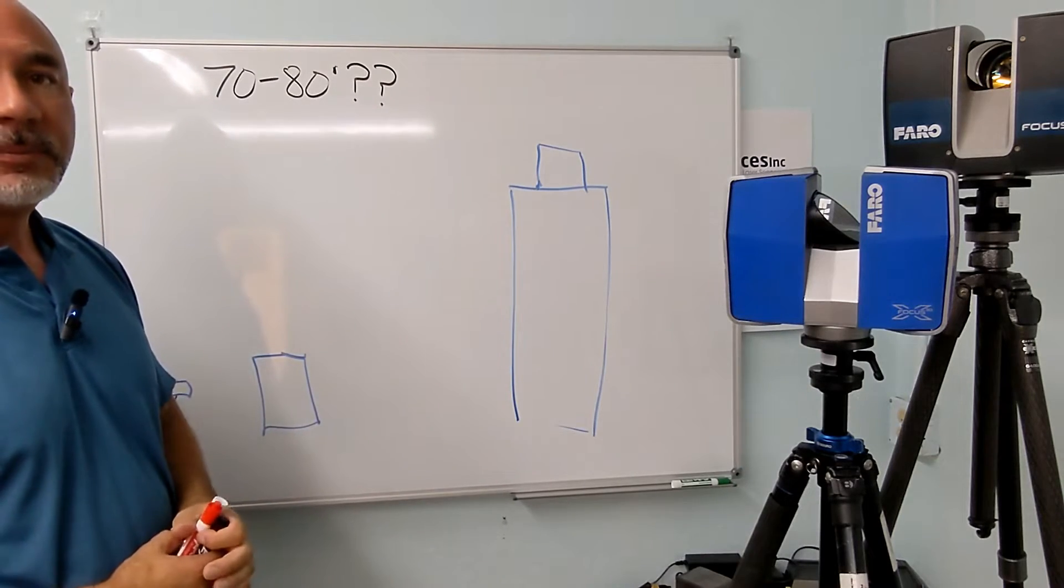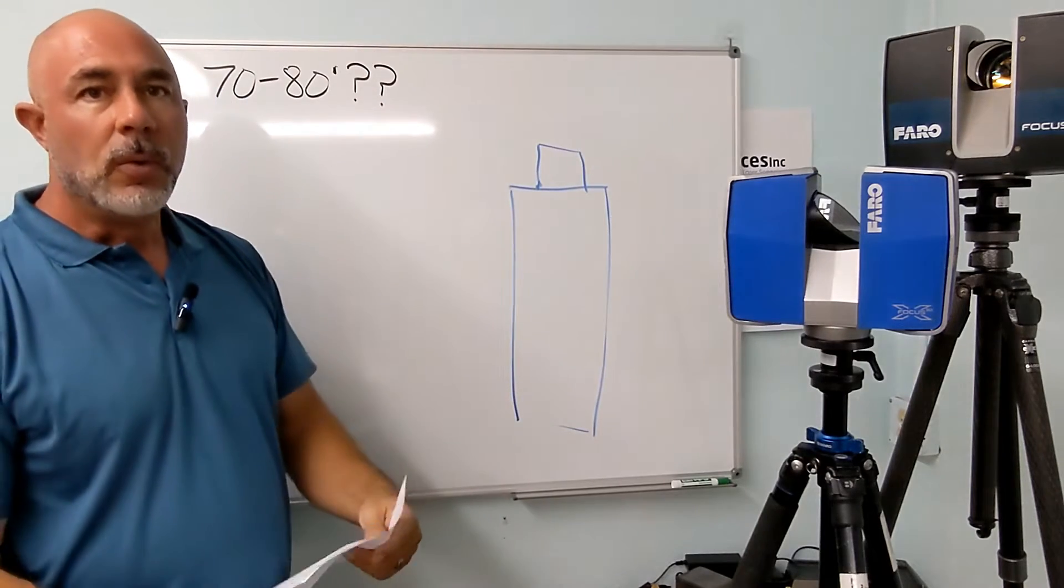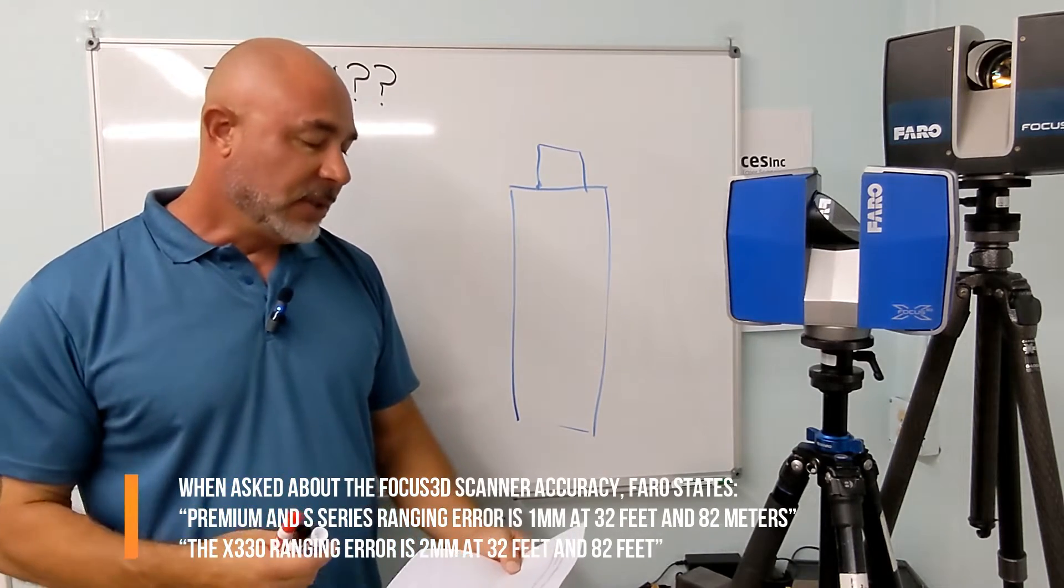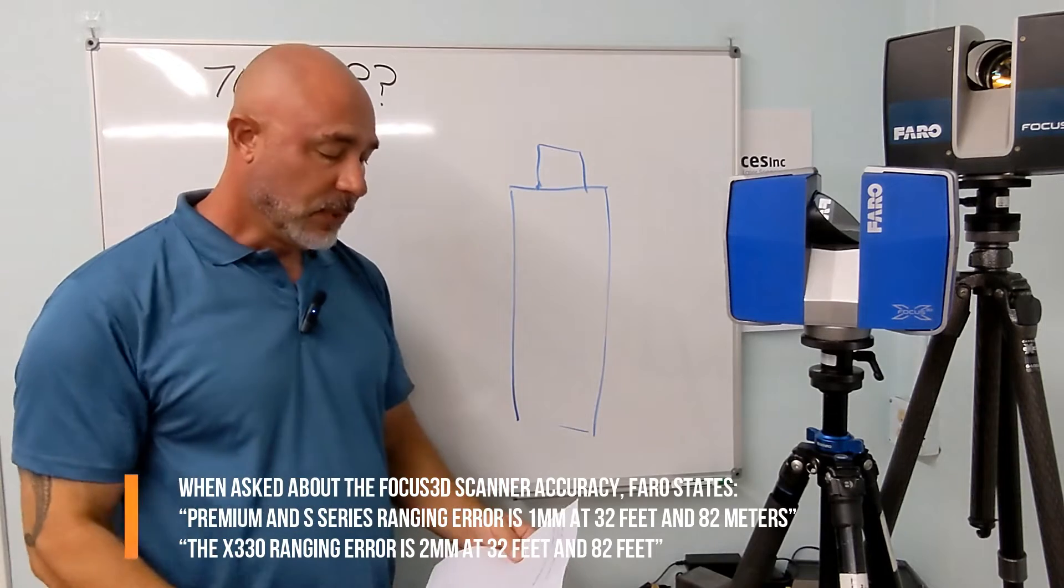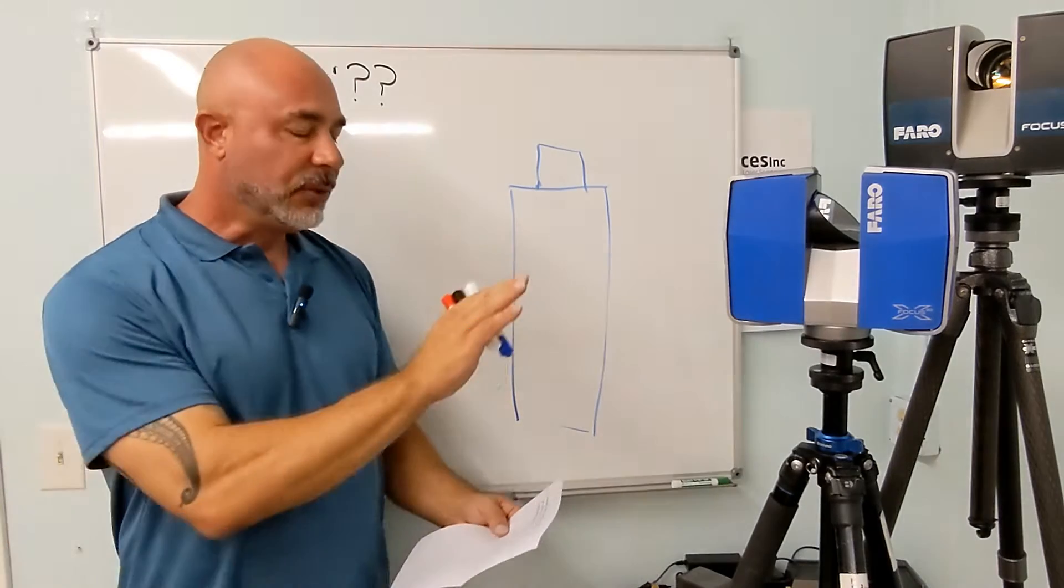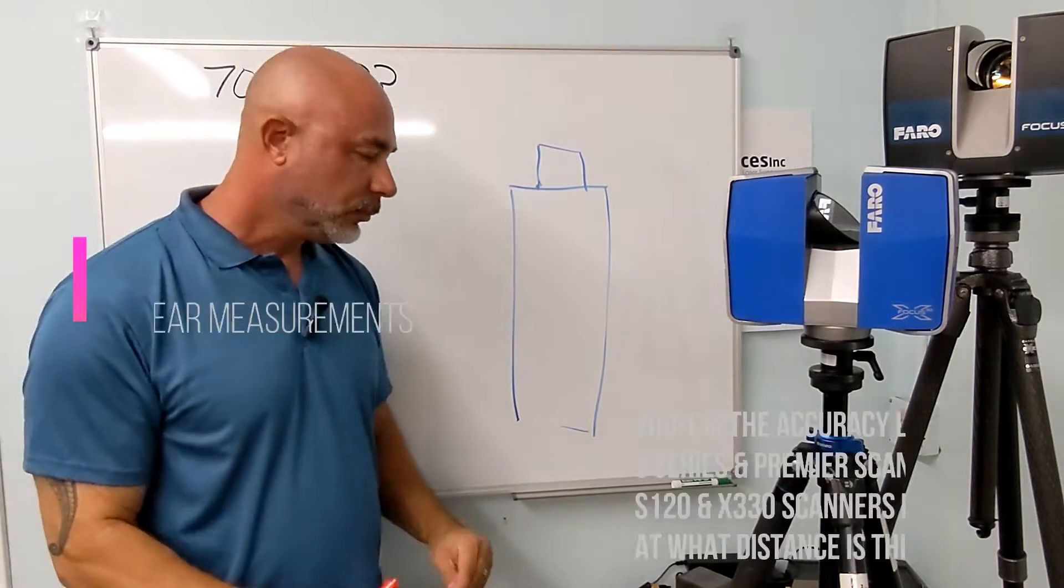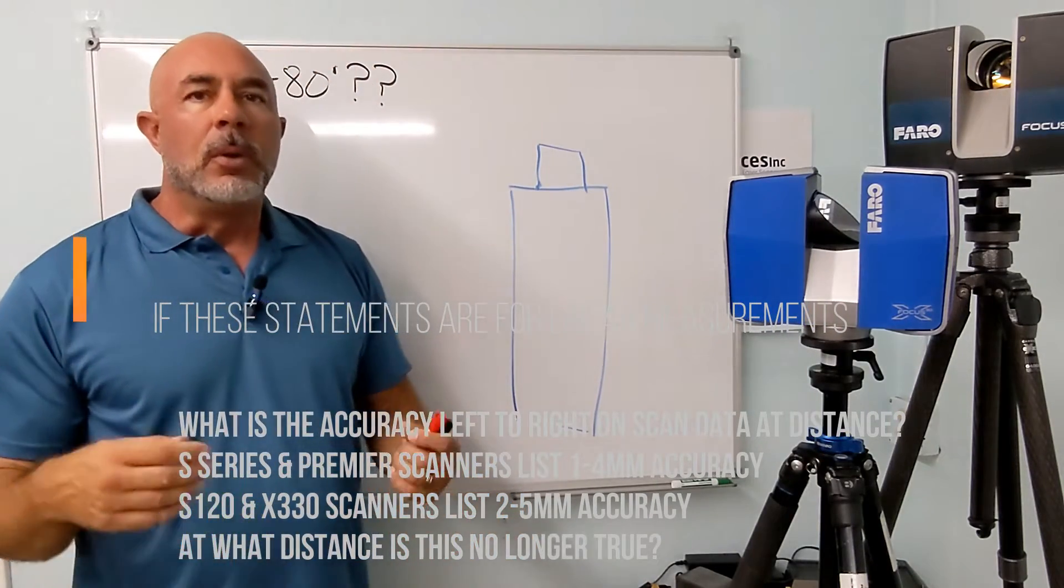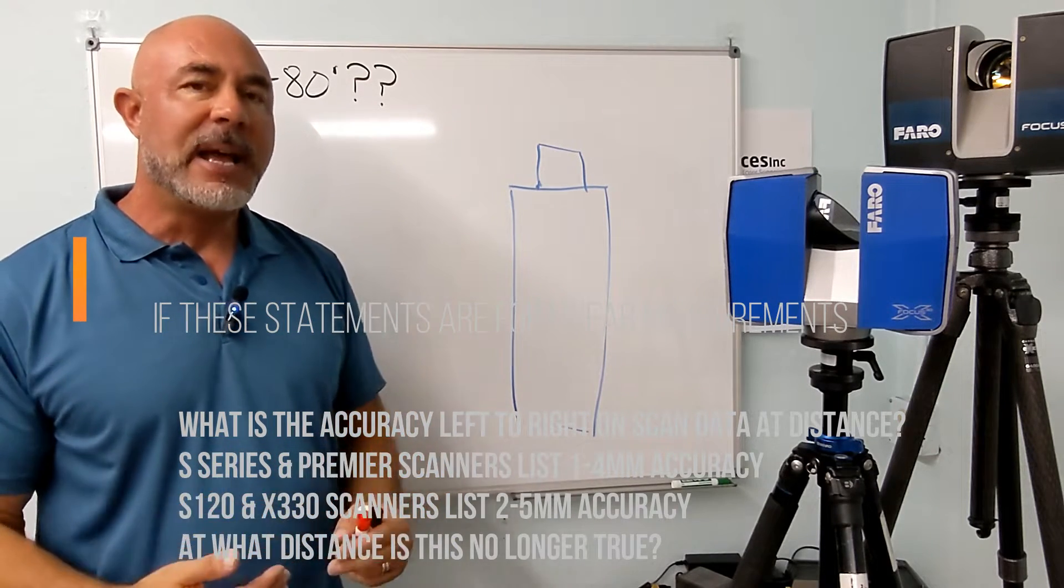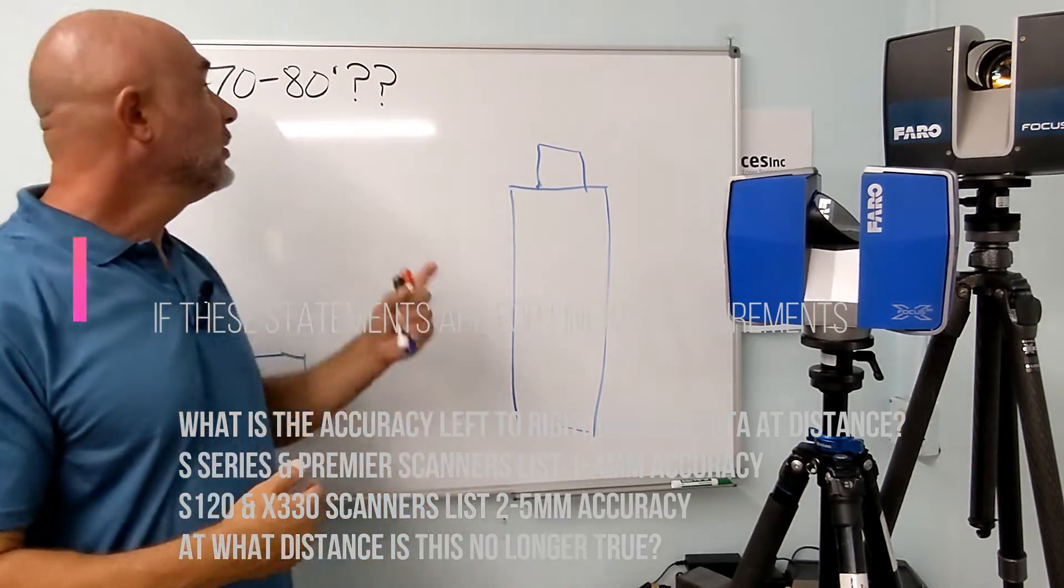Now, if you ask Faro a simple question of what is my accuracy at range, they said that the Premium and the S series, the ranging error is one millimeter at 32 feet and 82 meters. The X330 ranging error is two millimeters at 32 feet and 82 feet. My question is, what is our left to right, up and down accuracy of that scan data when it gets past 70 to 80 feet?